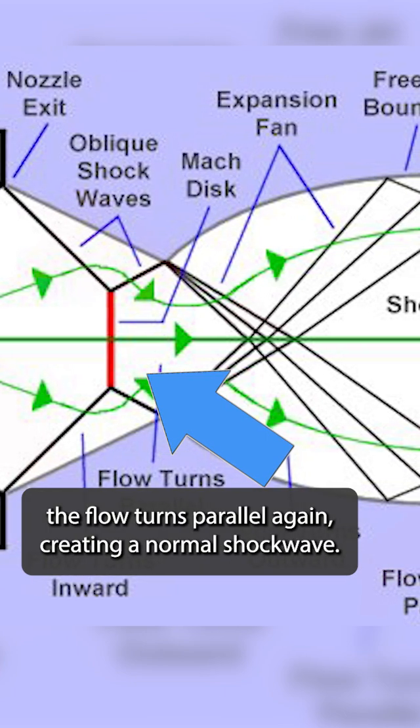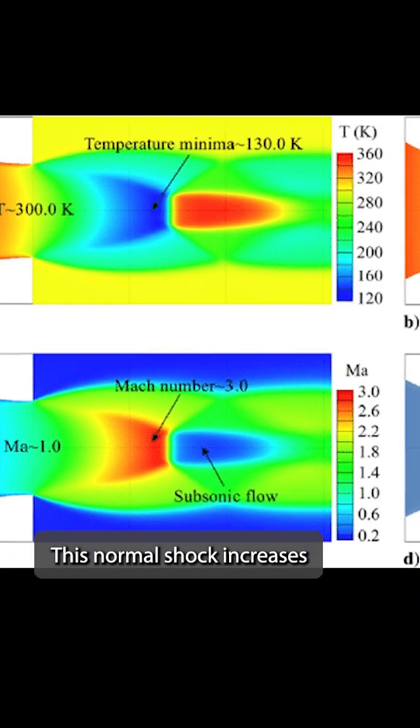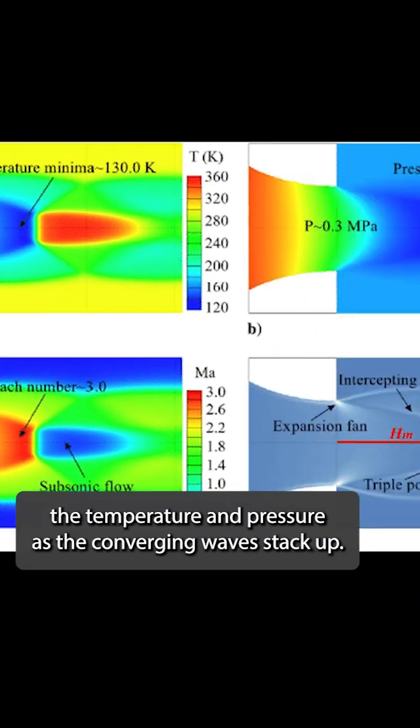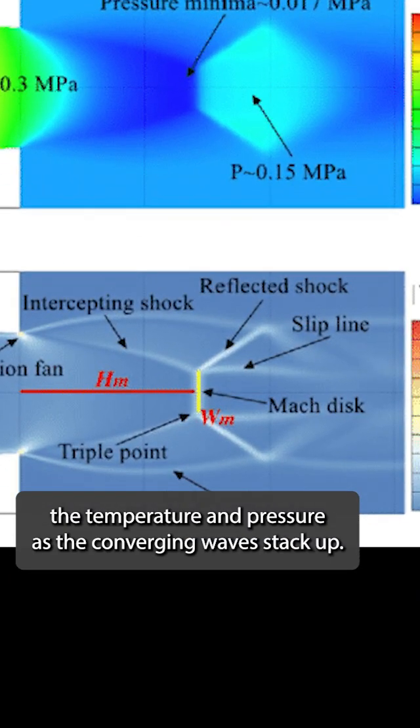When it bounces against the reversal from the other side, the flow turns parallel again, creating a normal shock wave. This normal shock increases the temperature and pressure as the converging waves stack up.